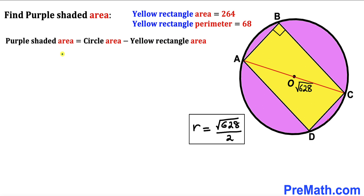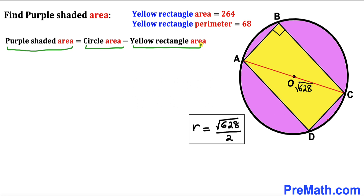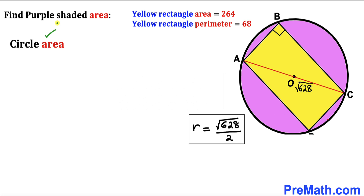Now let's calculate the area of the purple shaded region. The purple shaded area equals the area of the whole circle minus the area of the yellow rectangle. We already know the rectangle's area is 264, so our only remaining task is to calculate the area of the circle.